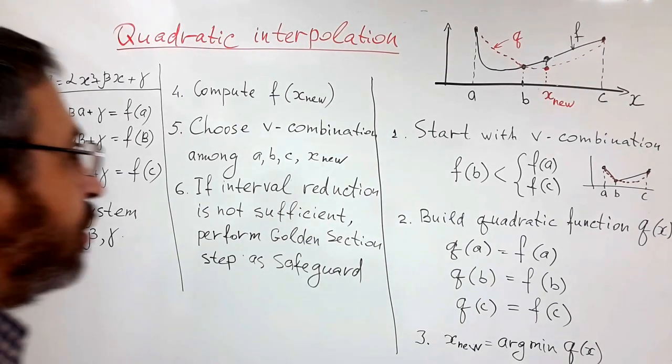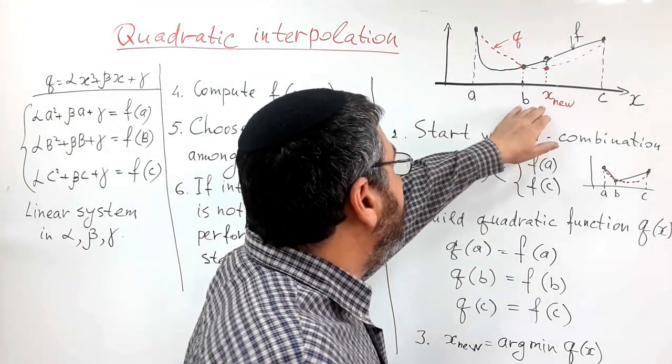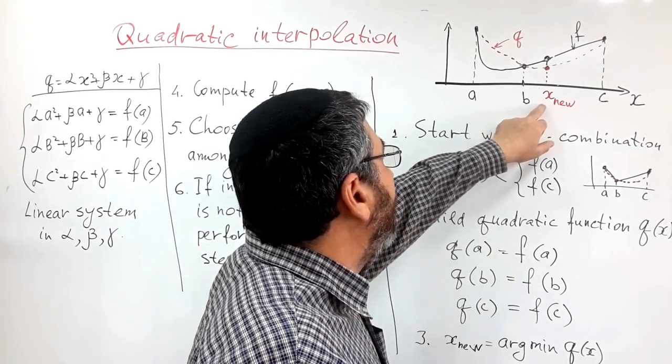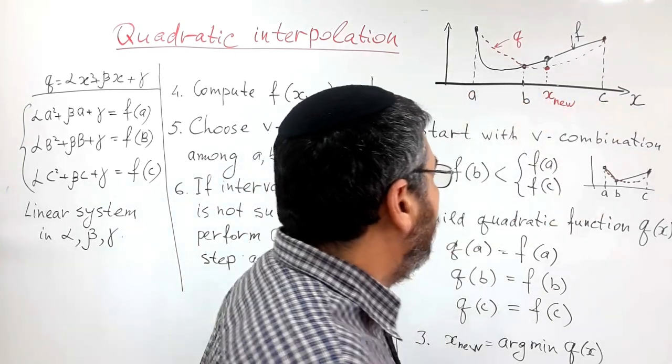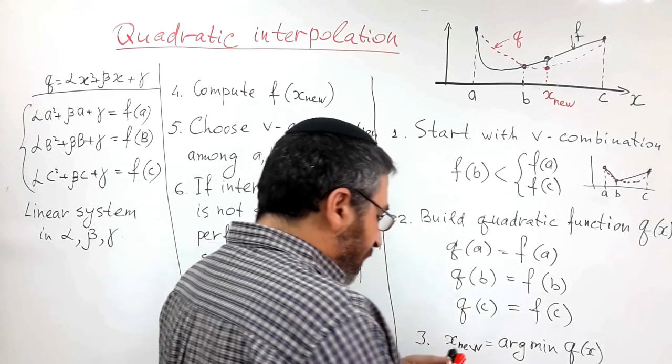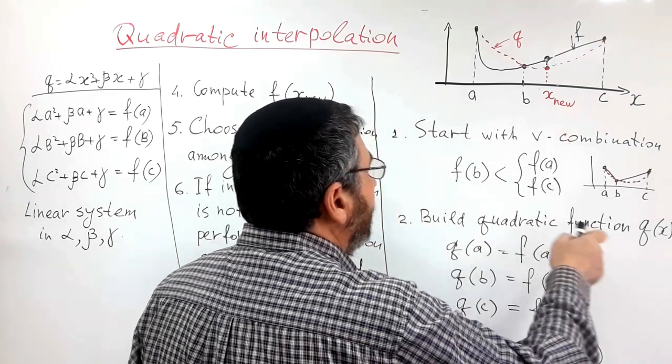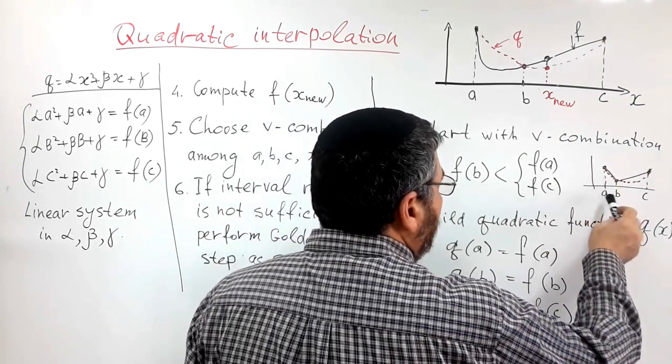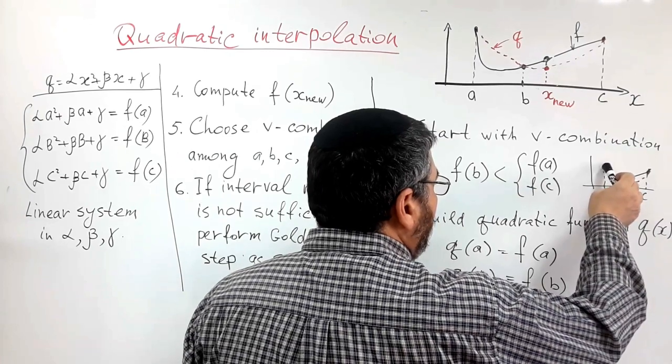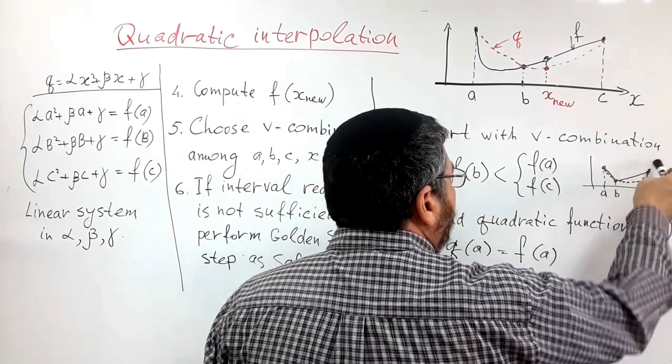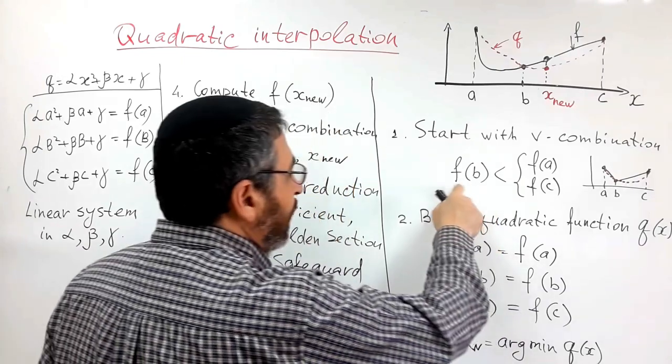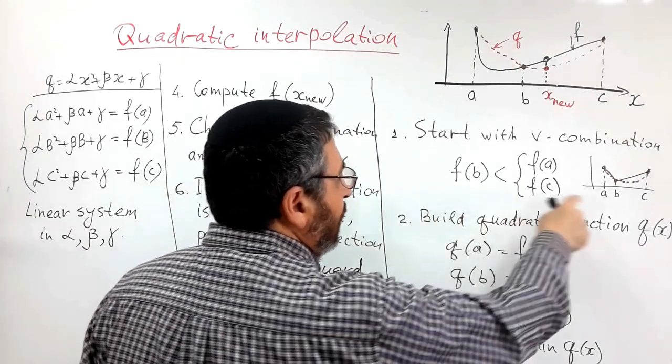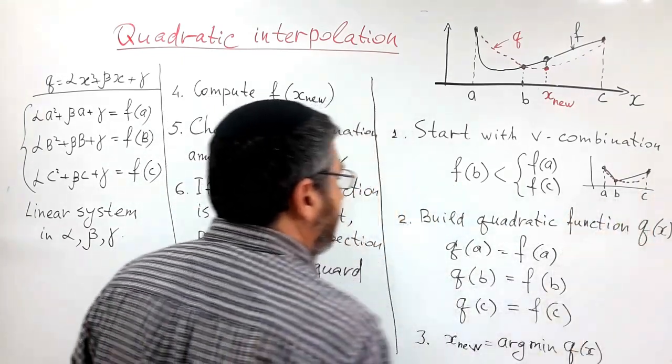In order to provide the condition that minimizer of quadratic parabola will be in the same interval, we need a so-called V-combination. We need the function value at A, B, and C to form like the letter V, meaning value at B should be smaller than value at A and C.